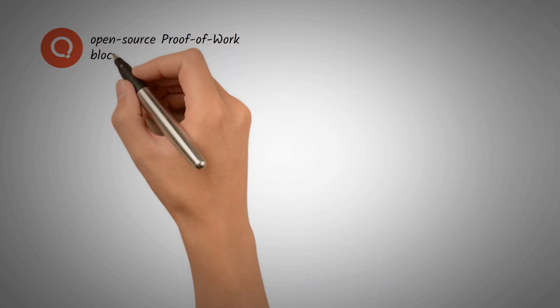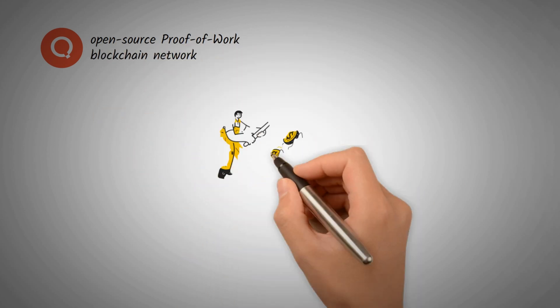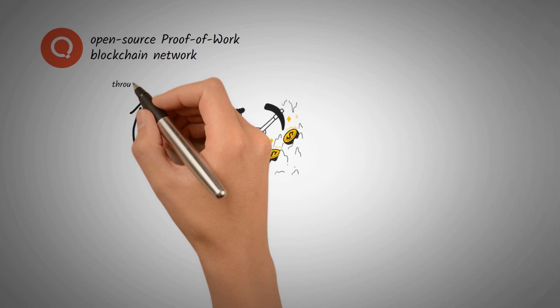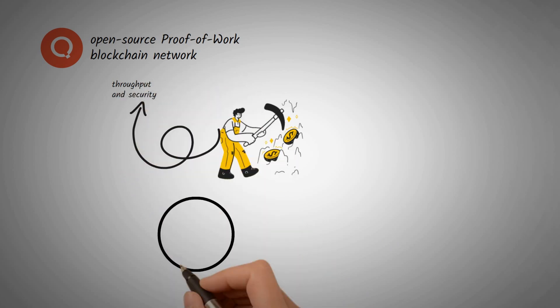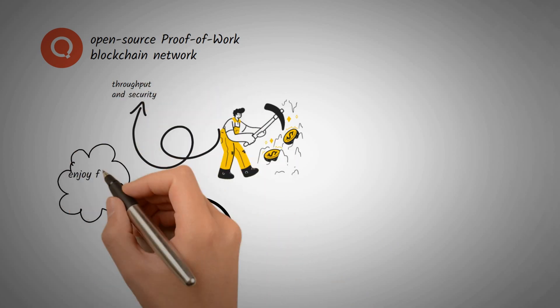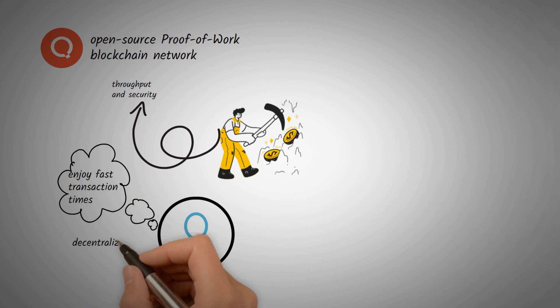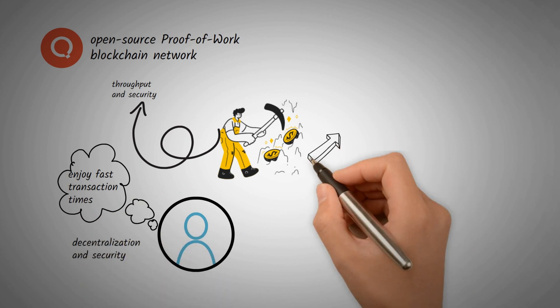Quai Network is an open-source proof-of-work blockchain network utilizing the capabilities of merged mining to increase throughput and security. Users of Quai Network will enjoy fast transaction times without compromising decentralization and security.